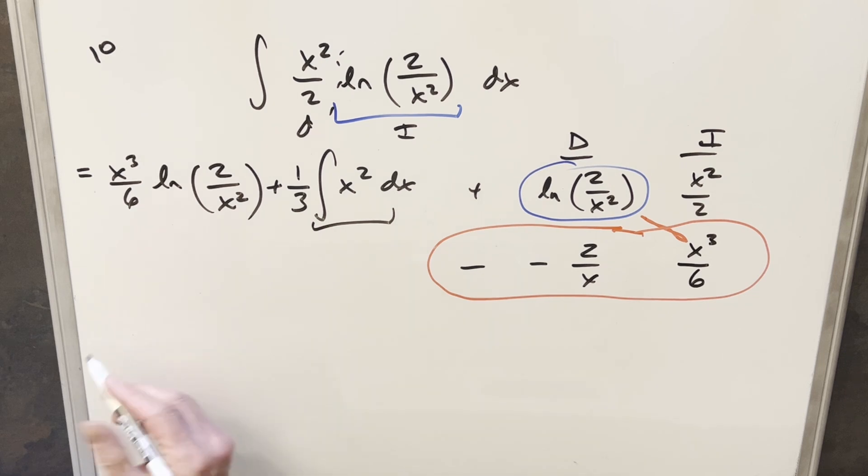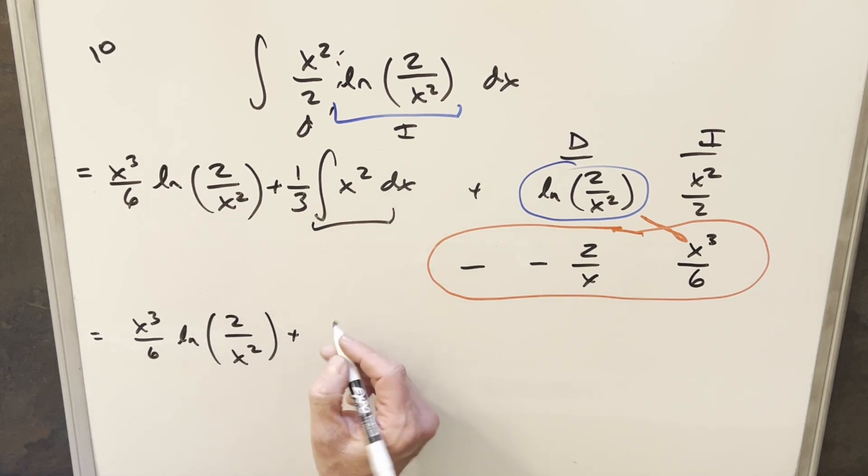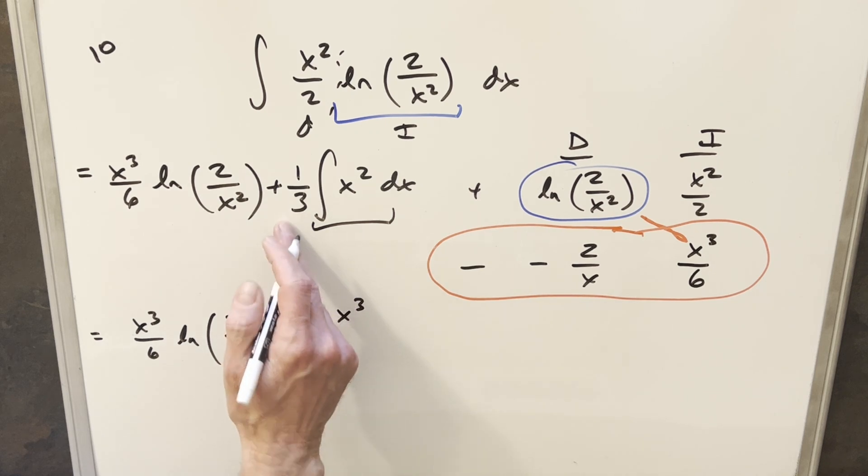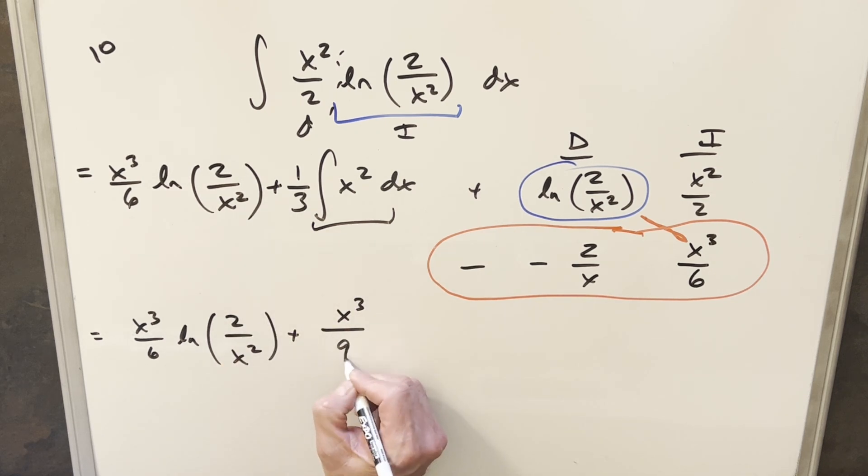But then this is just power rule over here, so I think we can just jump right to our solution. So we're going to have this first part that I'm going to copy down with the natural log 2x squared. And then when we integrate this, we're going to have x cubed over 3 times a third. So we're going to have x cubed over 9, put a plus c, and that's it.